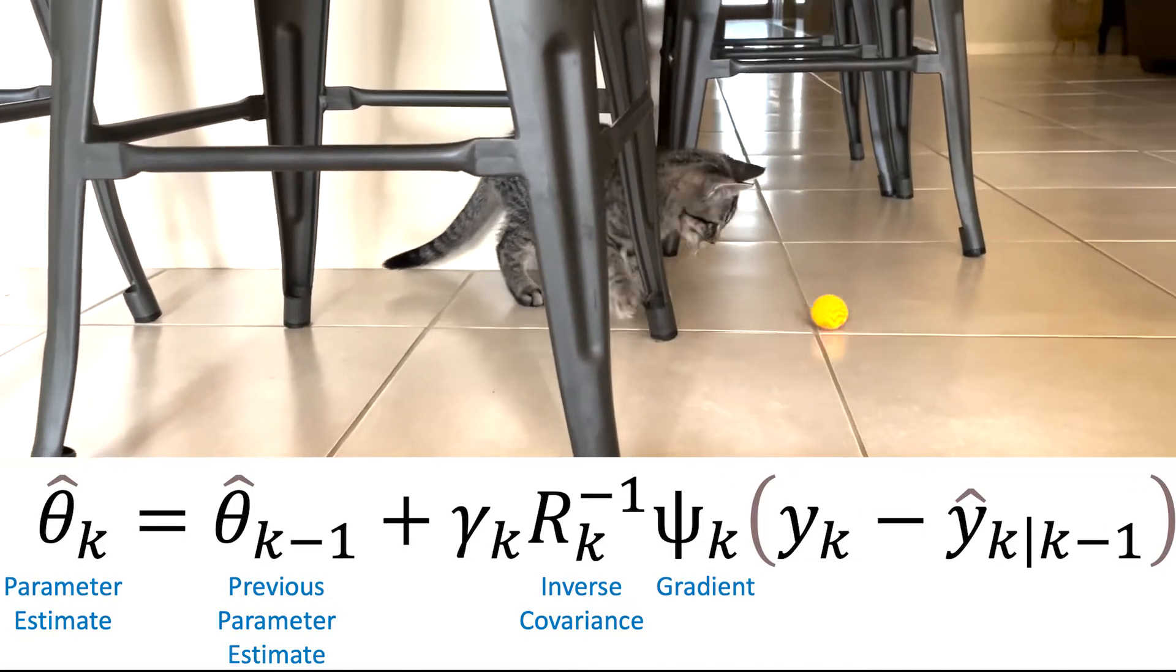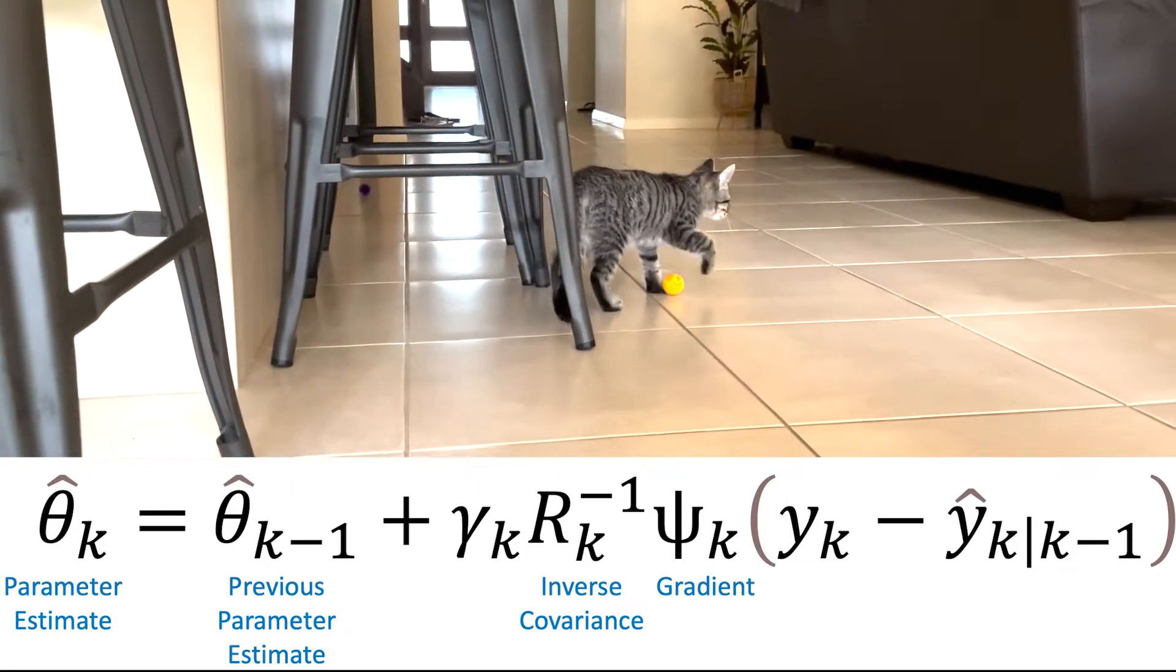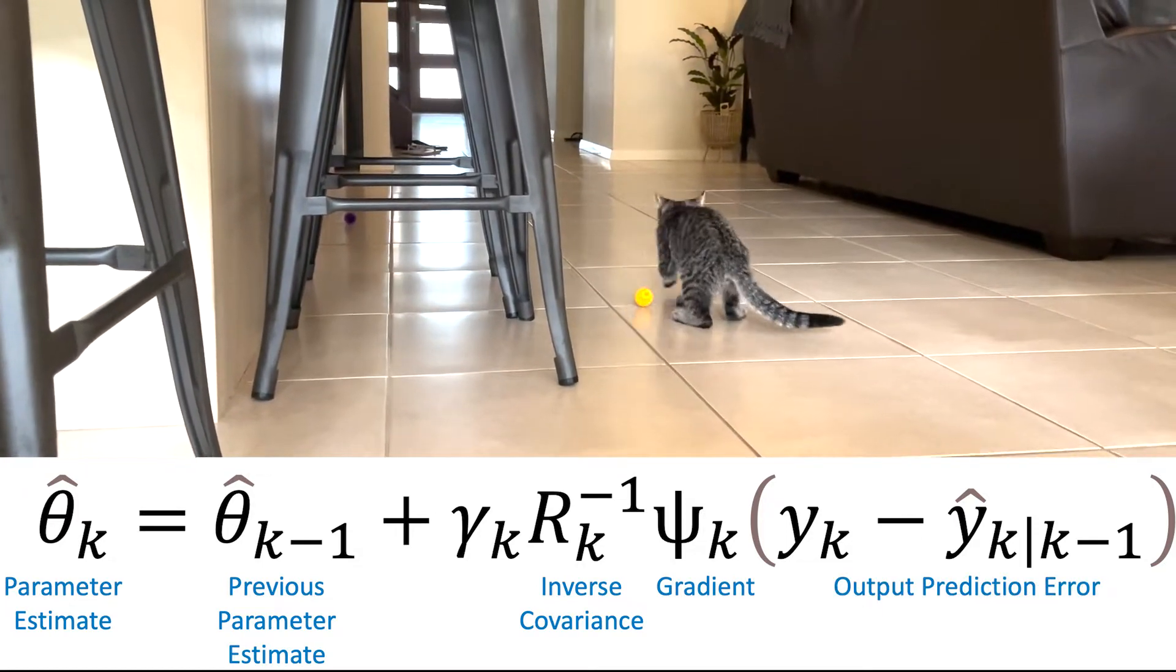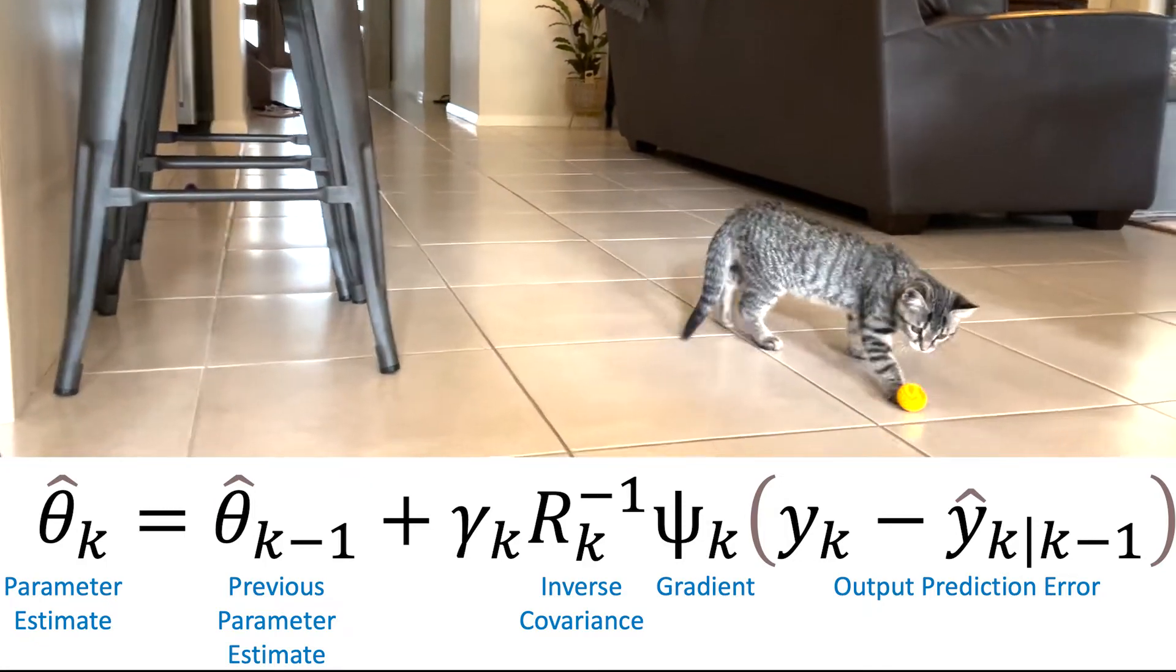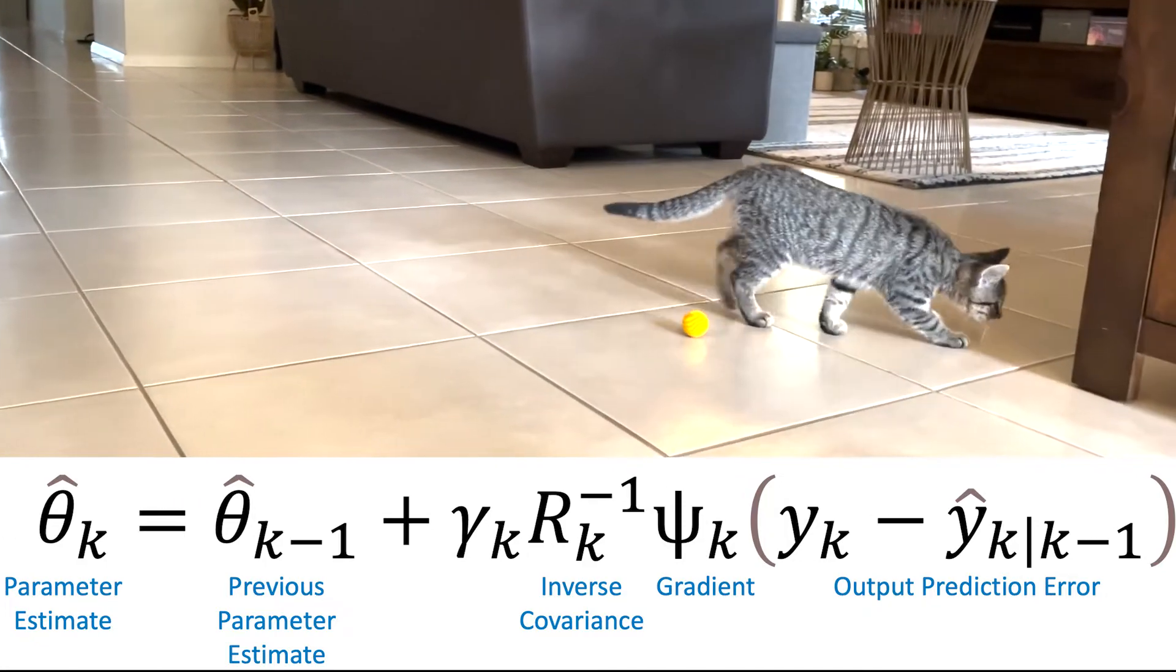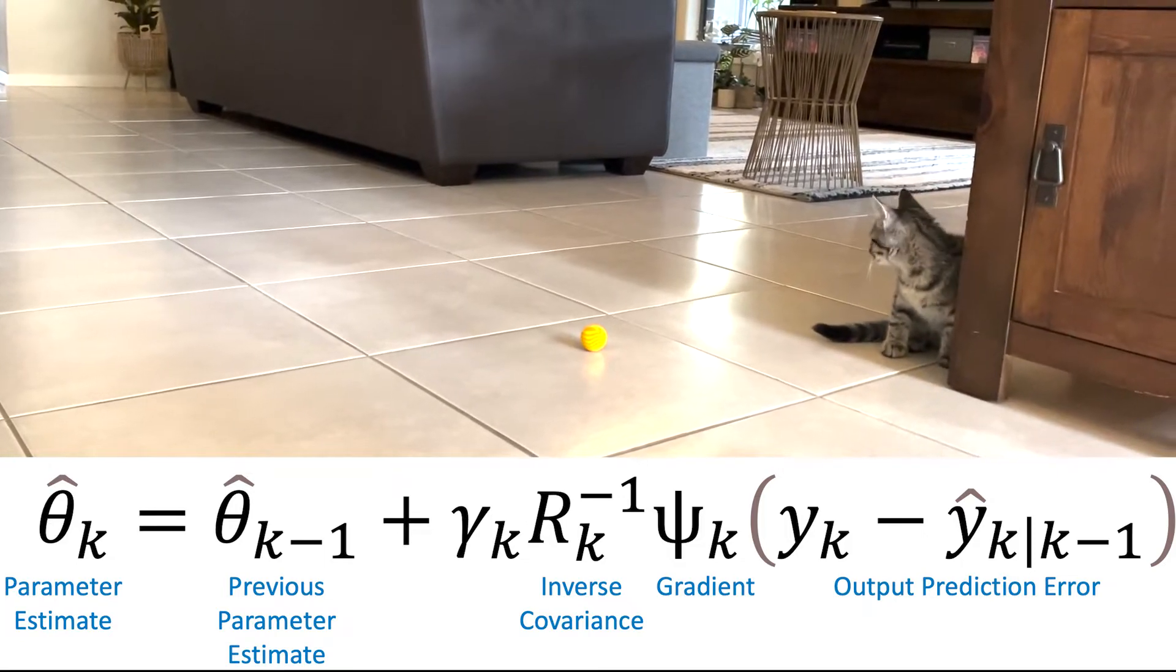There's an inverse correlation term to remove the correlation between the elements of the parameter estimate vector, and an output prediction error term. And as you make better predictions and you estimate the parameter better, this output prediction error term comes down, but it never goes lower than the noise in your observations.